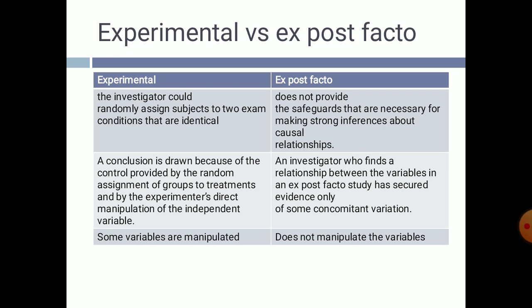In ex post facto research, an investigator who finds a relationship between variables has secured evidence only of some concomitant variation. This is a key limitation distinguishing it from experimental research.